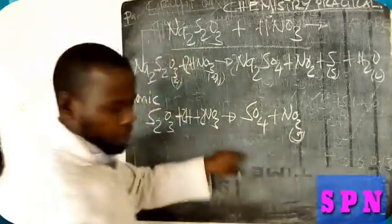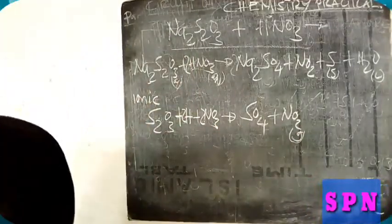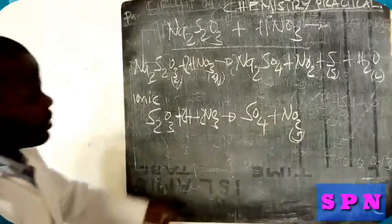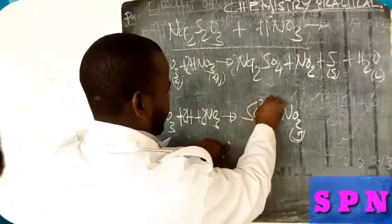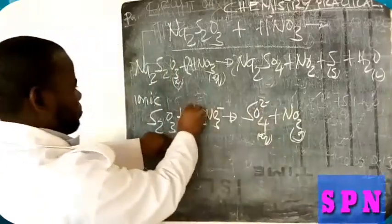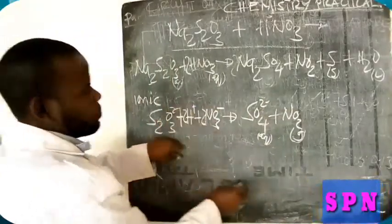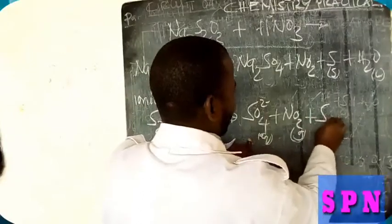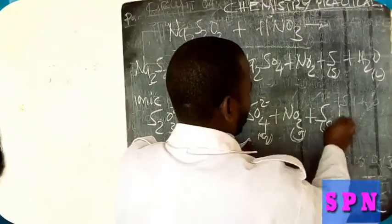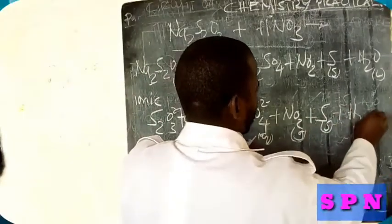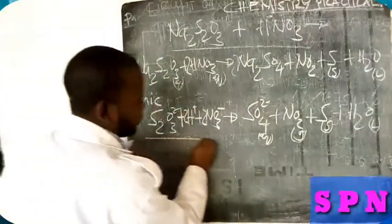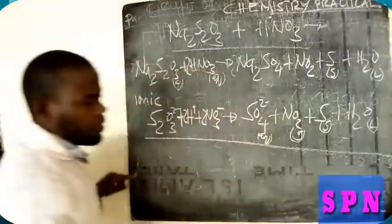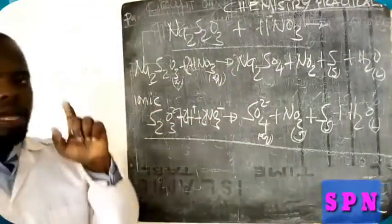This is the gas, SO3^2- plus H+ plus NO3- gives NO2 gas plus S precipitate plus H2O.